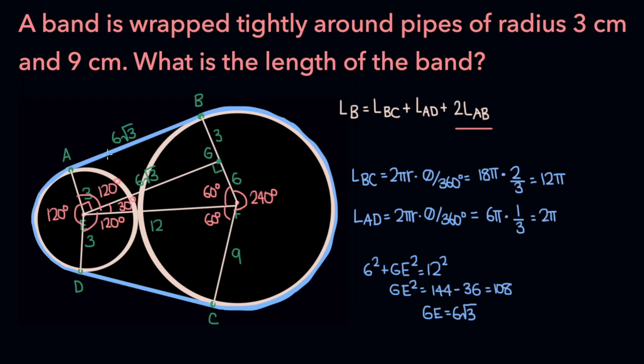So now we've computed the length of the four different portions of the band. We know the length of BC is 12 pi, the length of AD is 2 pi, and the length of AB and DC is 6 root 3.